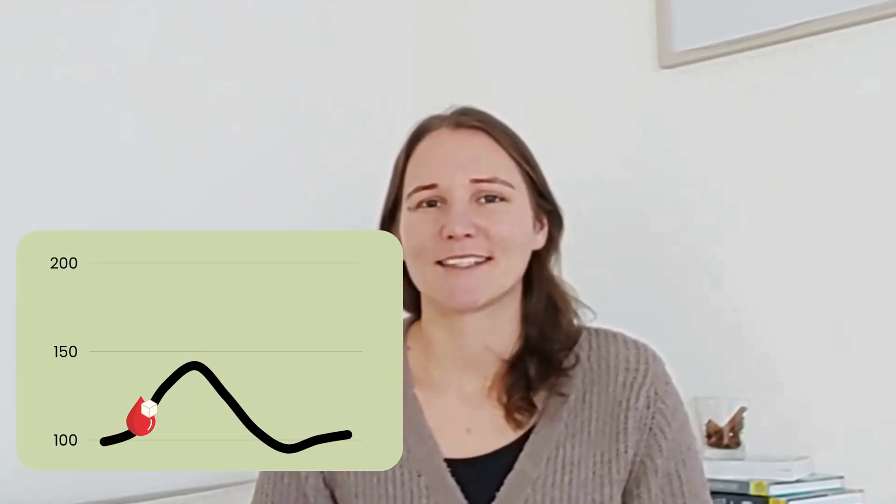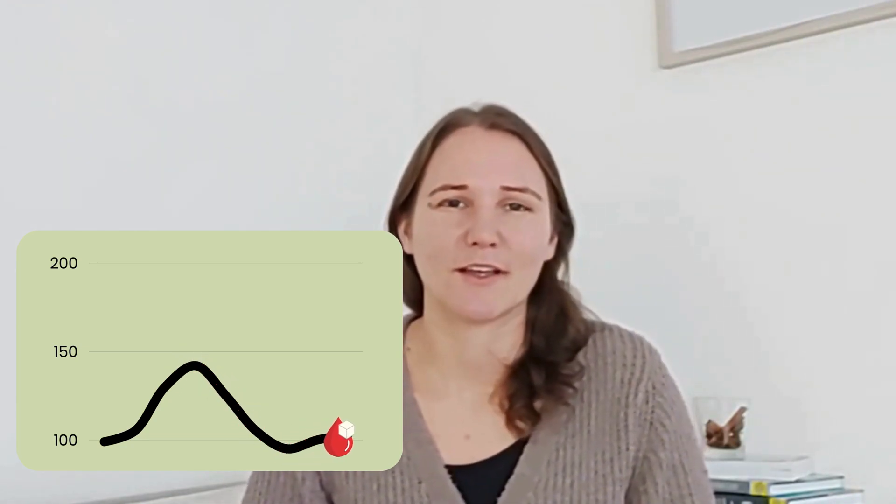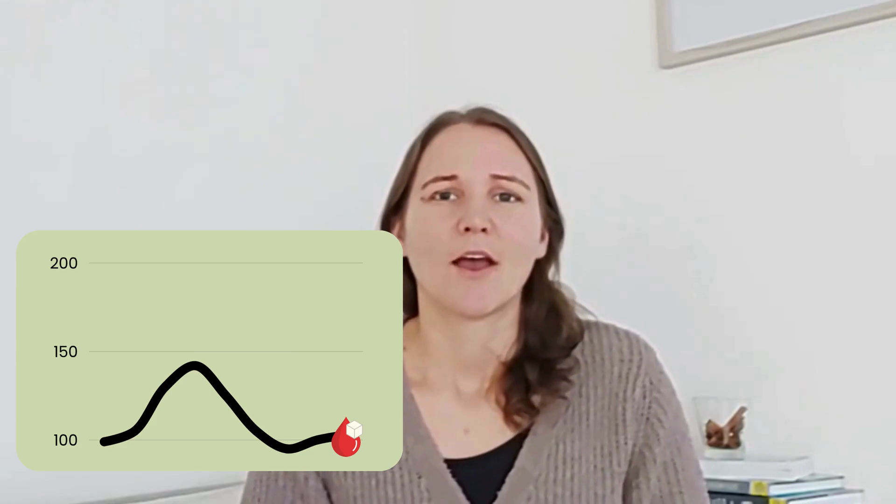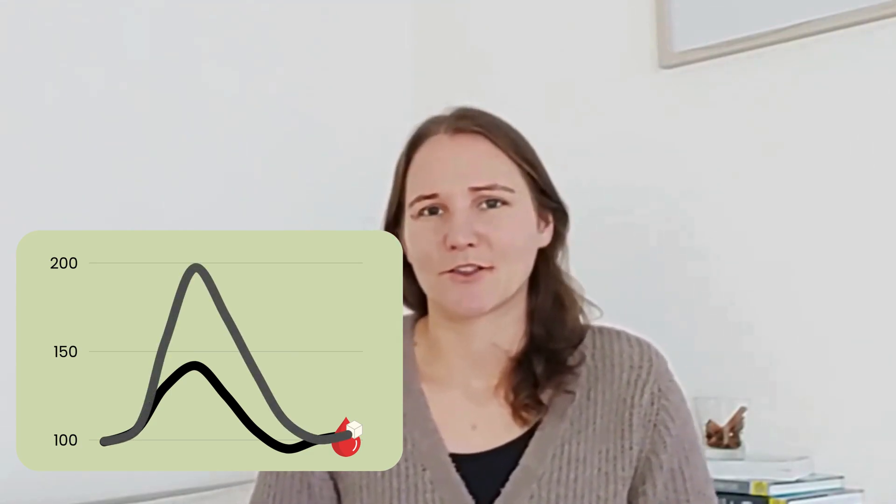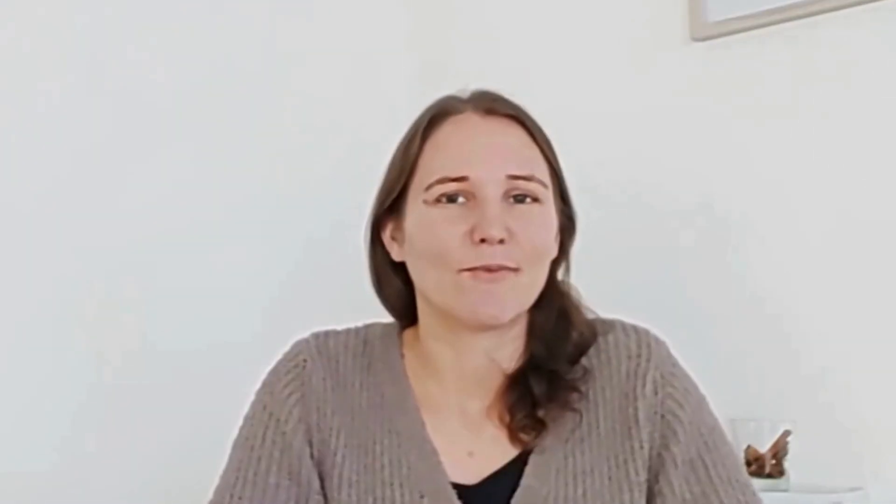Depending on your metabolic health, as a healthy person, you can expect a blood sugar spike up to 140 before it drops back down. Or as a type 2 diabetic, your blood sugar might spike up over 200 before it goes back to normal. The more spiky the peak of your blood sugar curve is, the more stressed your body is to get the blood sugar back down.